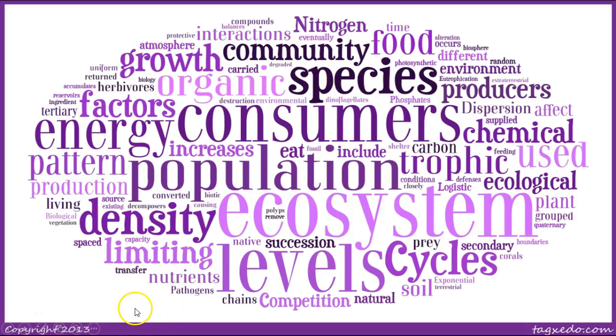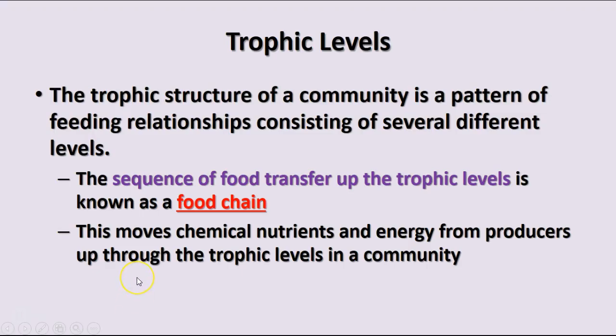One of the main things that happens within ecosystems is the transfer of matter and energy between members of the populations. When we look at communities, we look at the feeding relationships within the communities, and there are several different levels. We call the food transfer sequence up the trophic levels a food chain, and what this does is move the chemical nutrients and energy from the producers, the photosynthetic organisms, up through the feeding levels within the community.